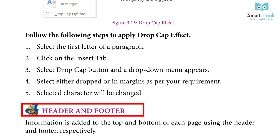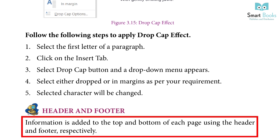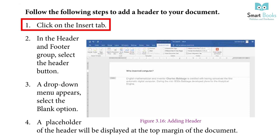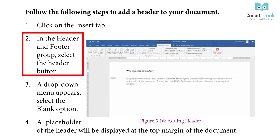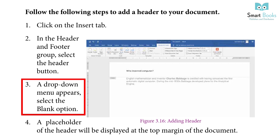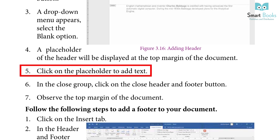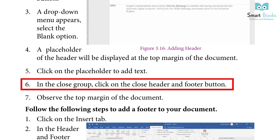Header and Footer: Information is added to the top and bottom of each page using the header and footer respectively. Steps to add a header: 1. Click the insert tab. 2. In the header and footer group, select the header button. 3. A dropdown menu appears — select the blank option. 4. A placeholder of the header will be displayed at the top margin. 5. Click on the placeholder to add text. 6. In the close group, click on the close header and footer button.